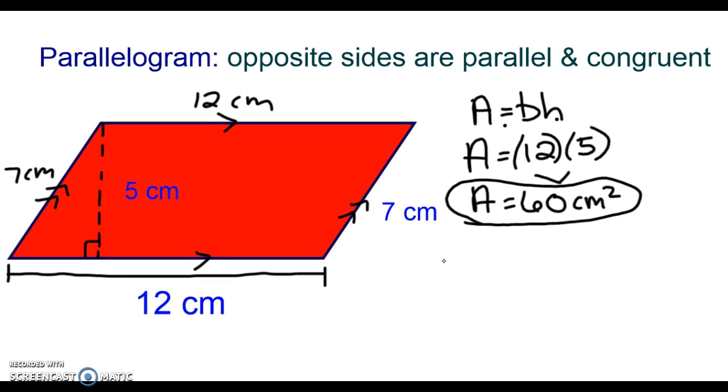What you want to be very careful not to do is when substituting into your area formula base times height, do not use 12 centimeters and 7 centimeters as your base and your height. 7 is not the height of this parallelogram. 7 does not form a right angle with the side that is 12 centimeters long. So you have to use 12 and 5 as your base and your height.